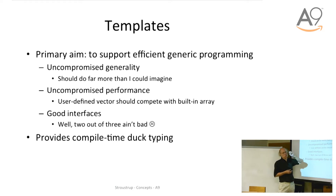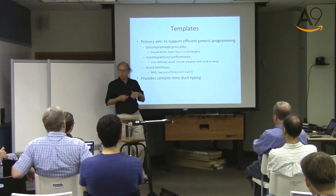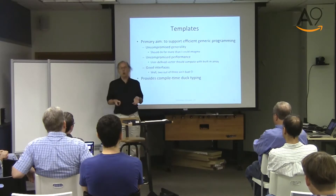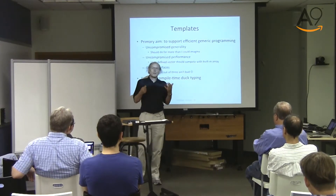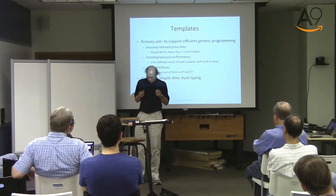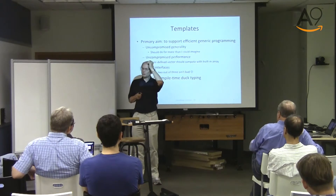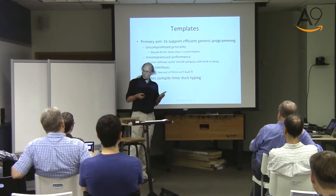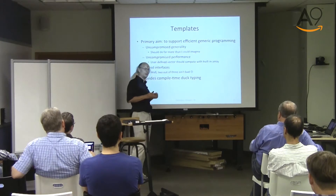We wanted to support efficient generic programming. I wanted a user-defined vector that could compete with arrays and operations on vectors, so that you could write code and get rid of my least favorite data type, which is the array - a data type so stupid it doesn't even know how many elements it's got. When I try to design something, I often settle on a couple of problems that seem key and convince myself that if I solve these, lots of other problems will be solved. The vector and operations on vectors were some of them, sort being the obvious example.